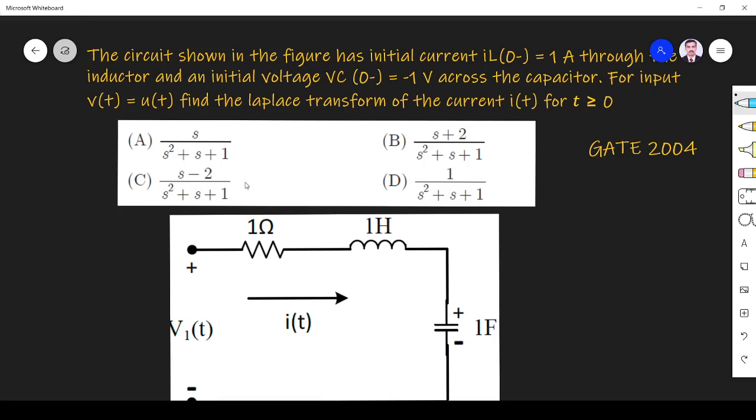The question is: the circuit shown in the figure has initial current IL(0-) = 1 ampere through the inductor and initial voltage VC(0-) = -1 volt across the capacitor. For input V = U, find the Laplace transform of the current I(t) for t ≥ 0.